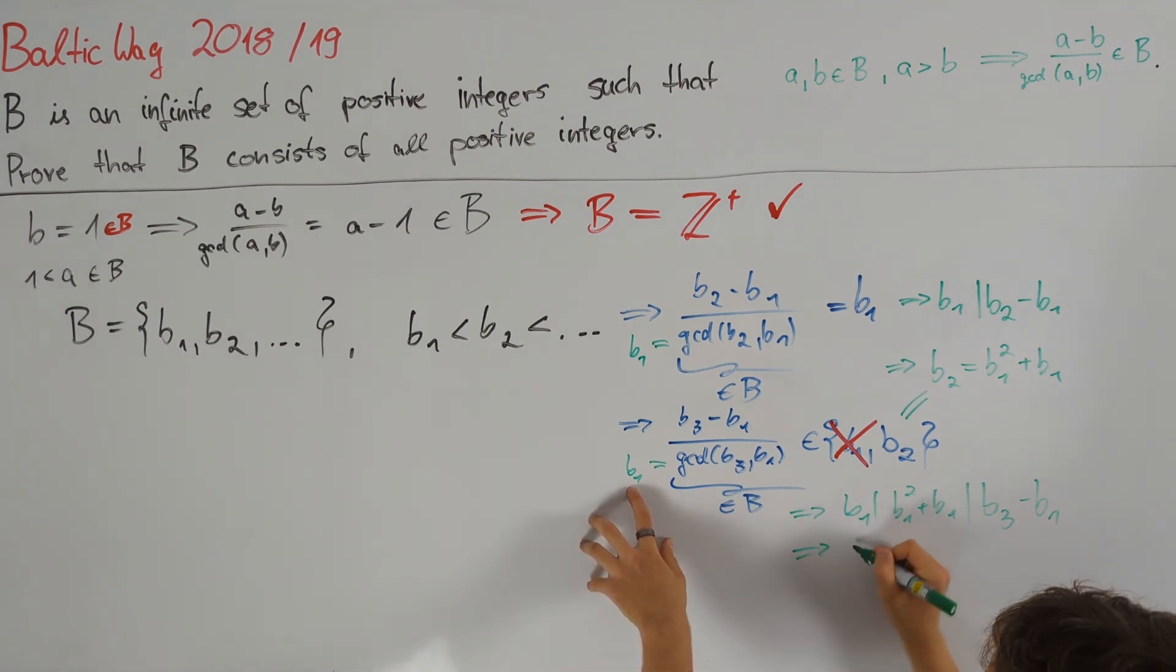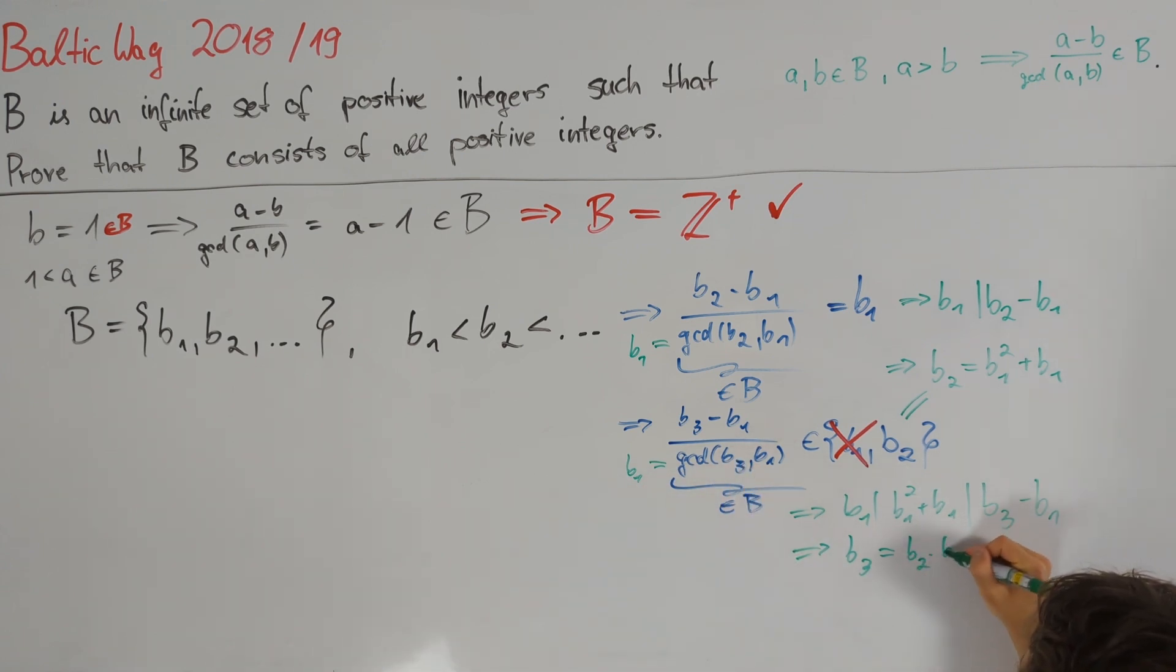We conclude, after multiplying both sides by b1 and adding b1, that b3 is equal to b2 times b1 plus b1, which equals b1 cubed plus b1 squared plus b1.